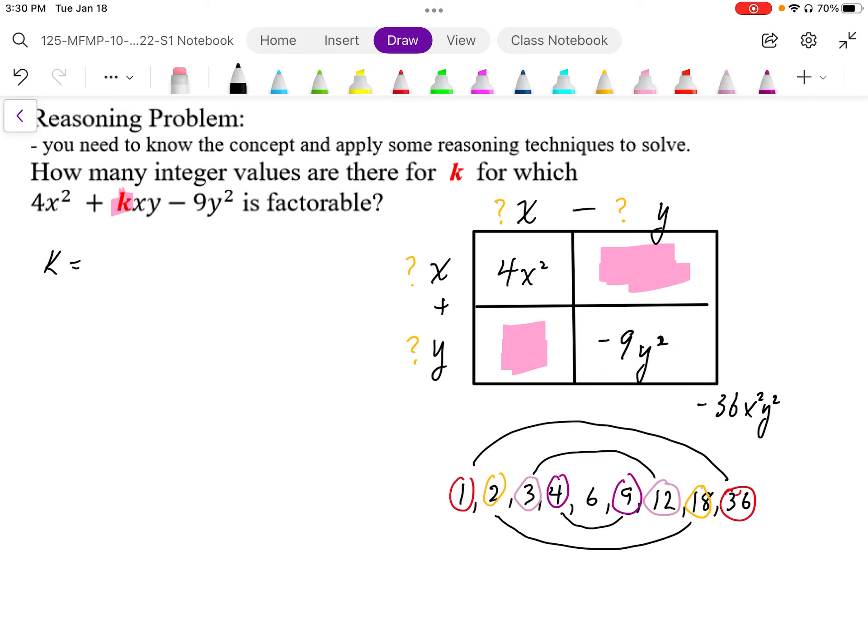So when we pair up the 1 and 36, well, 1 has to be positive, 1 has to be negative. So we can get positive 35, or we can get negative 35.